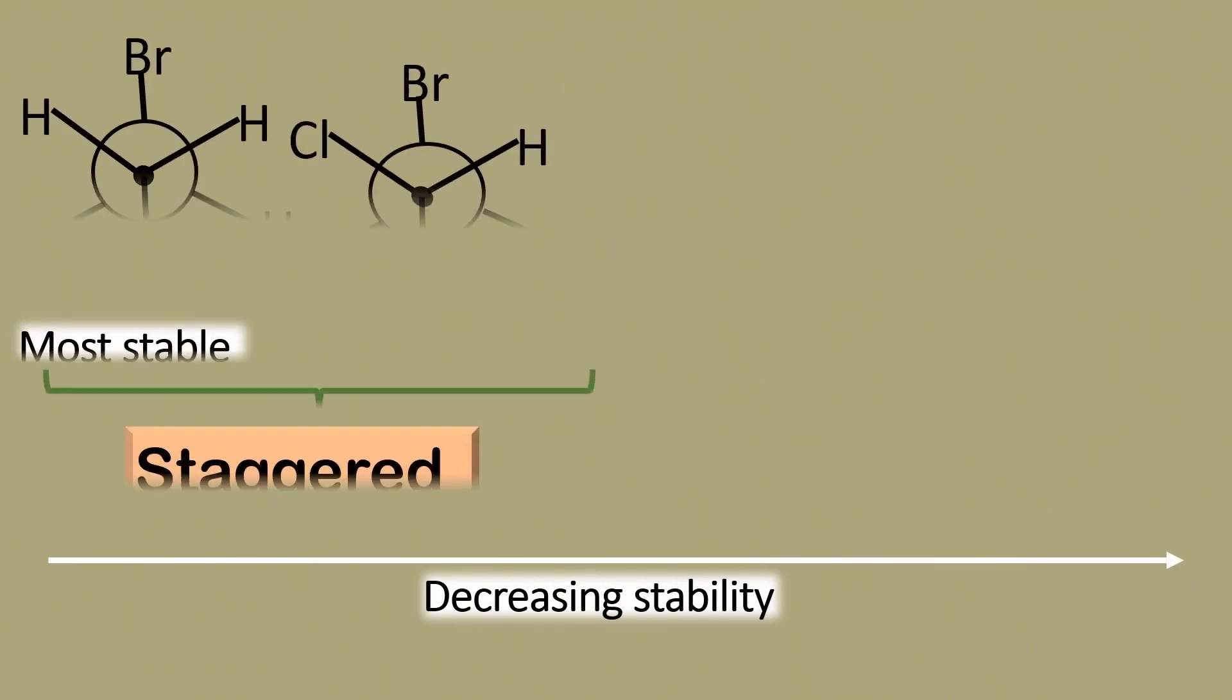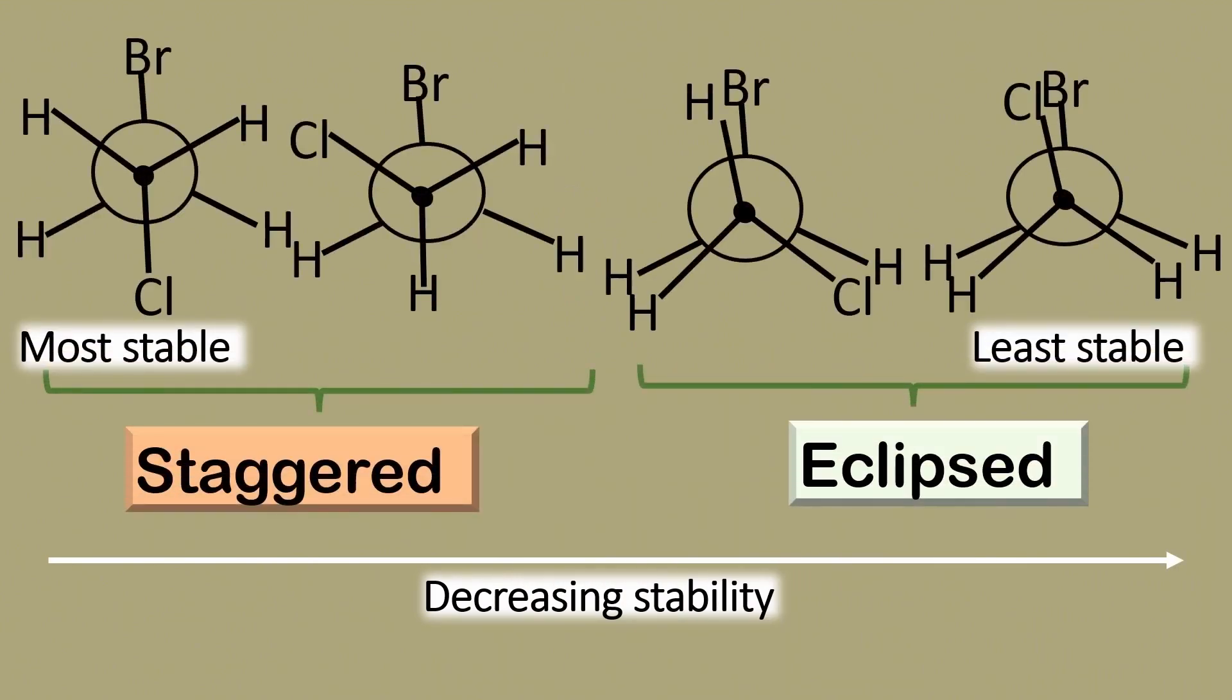The staggered conformers are more stable than the eclipsed conformers, because in the staggered conformers, the bonds and the atoms experience minimum repulsions. This implies that there is minimized steric and torsional strain.